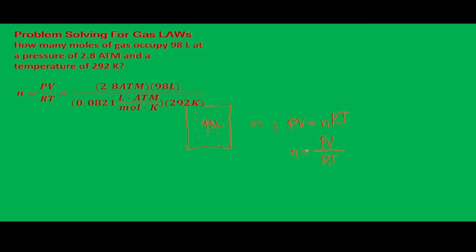The pressure is 2.8 atm and the volume is 98 liters. We use the universal gas constant R and the temperature in the Kelvin scale. Once you plug this into a calculator, you will find that this is equivalent to 11.5 moles of gas.